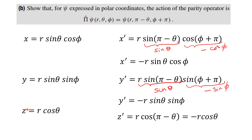Then we know z = R cos(theta) in spherical polar coordinates. So z-prime is R cos(pi minus theta). We know that cos(pi minus theta) equals minus cos(theta), so this becomes minus R cos(theta). We can see that x-prime = minus x, y-prime = minus y, z-prime = minus z — all become negative.